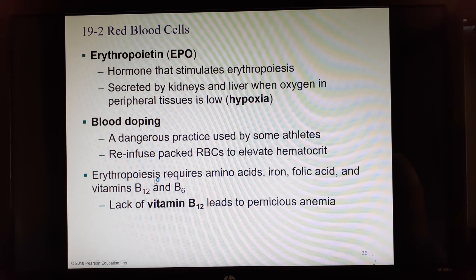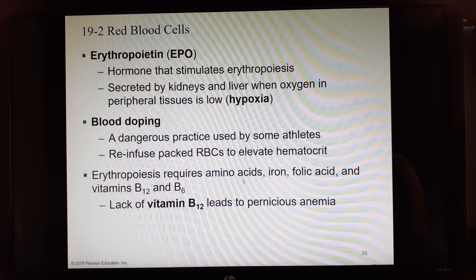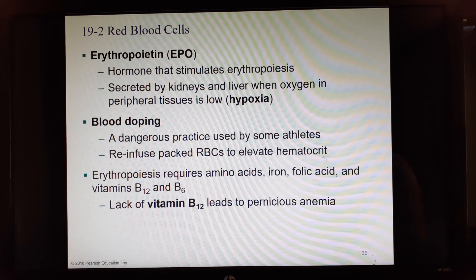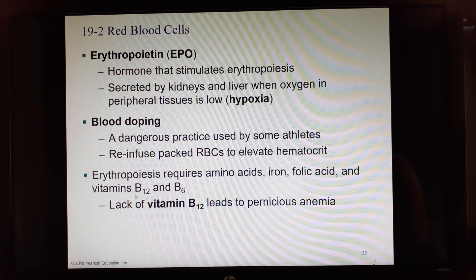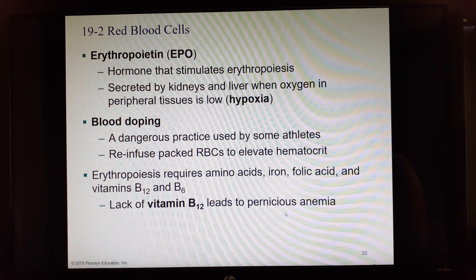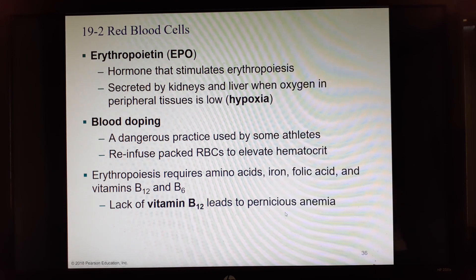To make red blood cells via erythropoiesis, you need the right amino acids to build hemoglobin, iron, folic acid (a B vitamin), vitamin B12, and vitamin B6. A deficiency of B12 leads to a condition called pernicious anemia.